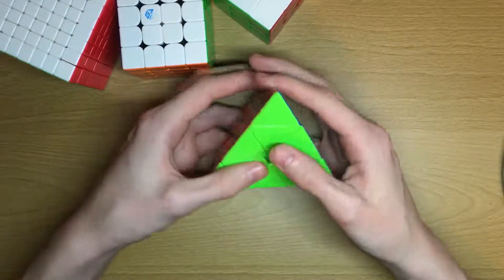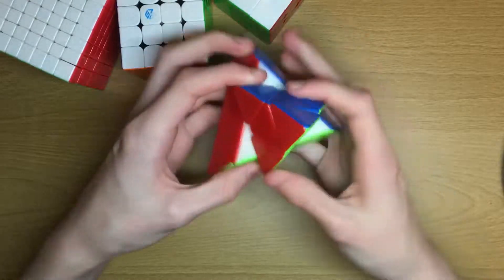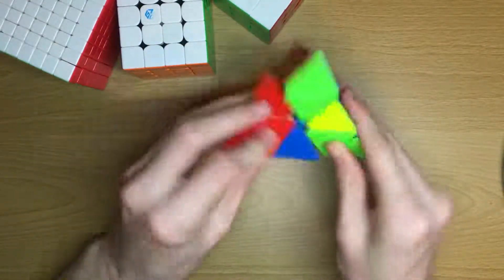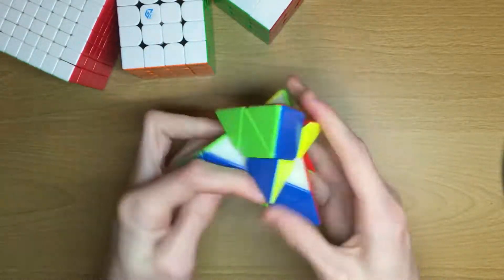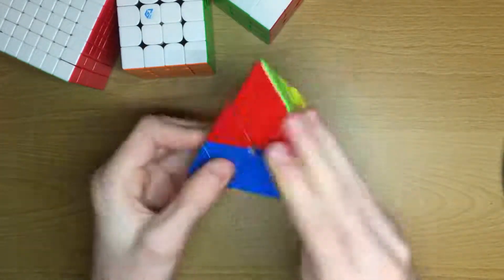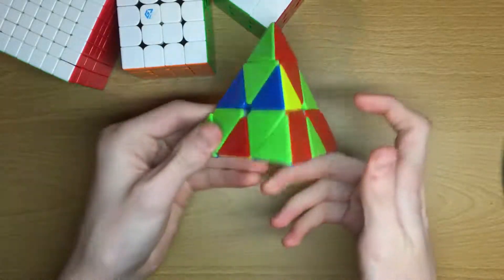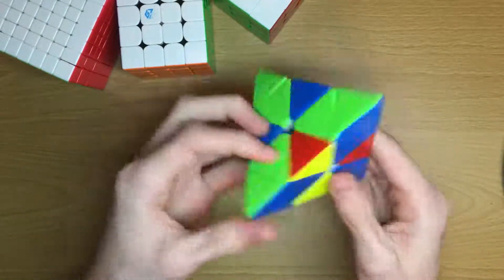Then for Pyraminx, I'm gonna be using the X-Man Bell, and I've been practicing a lot of Pyraminx lately. So it'd be nice to get some good results in there. A sub-2 single would be nice, although by no means I'm not counting on it.